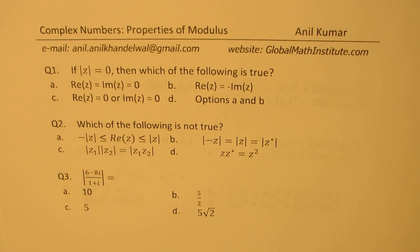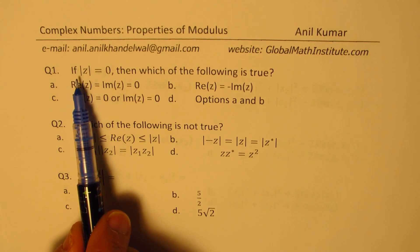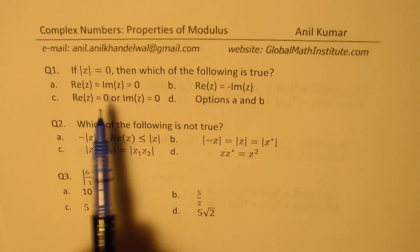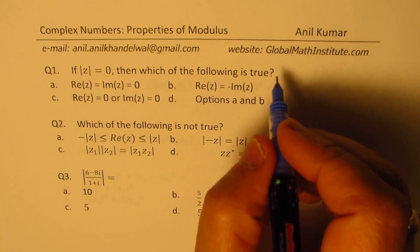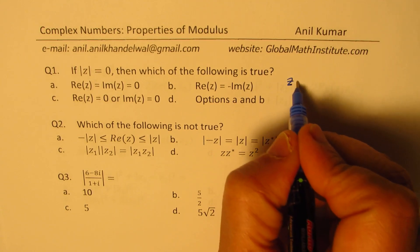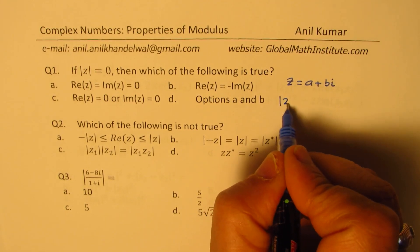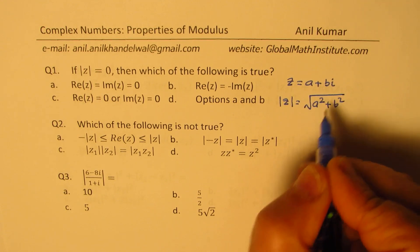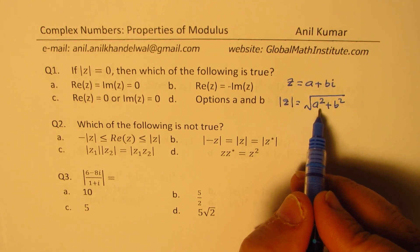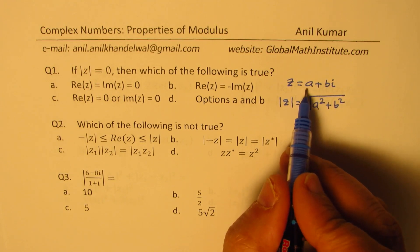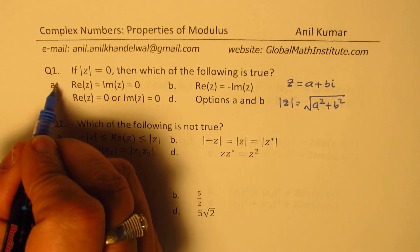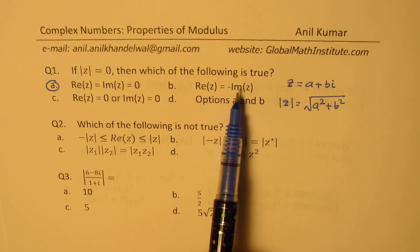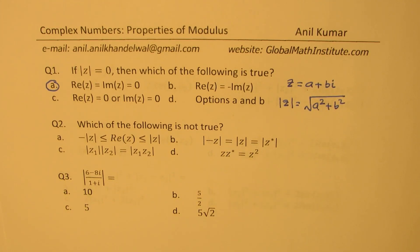The very first question is: if the modulus of a complex number z is equal to zero, then which of the following is true? We are given four options. When we say modulus of z, let's say z equals a plus bi. In that case, the modulus of z is square root of a squared plus b squared. This can only be zero if both a and b are zero. That means the imaginary and the real part are both zero, and therefore option A is the correct option. Even if we have a negative value, the square makes it positive, so you don't really get zero there.